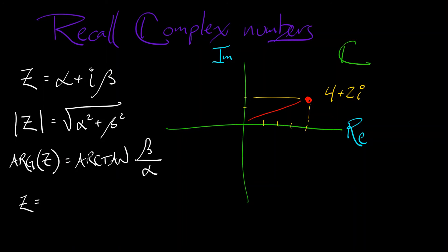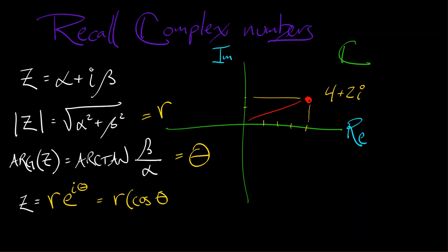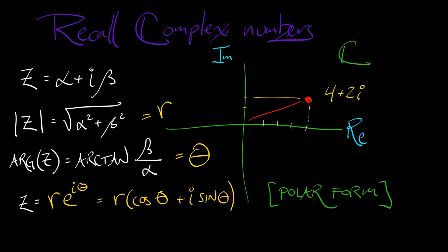The analog of the angular coordinate is sometimes given the old-fashioned name of argument — it's really just the arctan of beta over alpha. And instead of representing a complex number as alpha plus i beta, you can also represent it as r times e to the i theta, where we use Euler's formula to expand out that imaginary exponential. E to the i theta is cosine theta plus i sine theta. Hopefully these are things you've seen before — we are going to use them eventually.